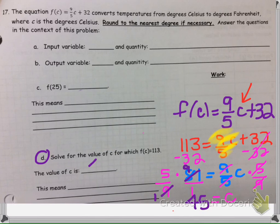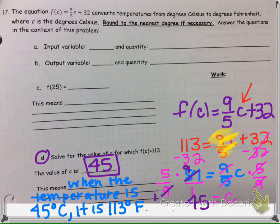So the value of C is 45, and now we have to explain what it means. We can say that this means when the temperature is 45 degrees Celsius, because it's 45 is C, it is equivalent, or it is the same thing as 113 degrees Fahrenheit.